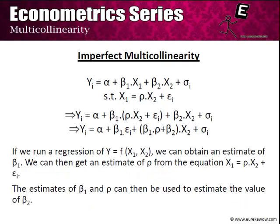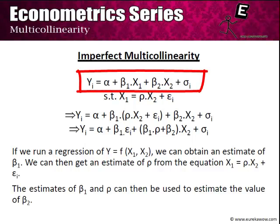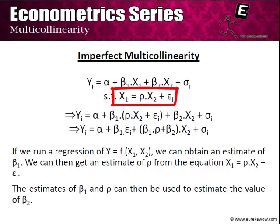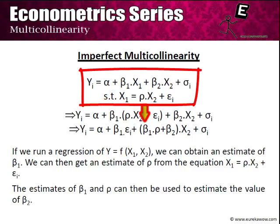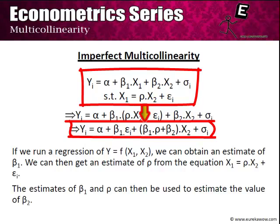However, in the case of imperfect multicollinearity, consider the same PRF yi = α + β1·x1 + β2·x2 + σi, such that x1 = ρ·x2 + εi — that is, there is an error term. Substituting this value of x1, we get yi = α + β1·εi + (β1·ρ + β2)·x2 + σi.